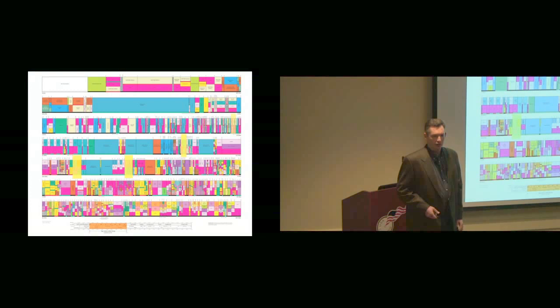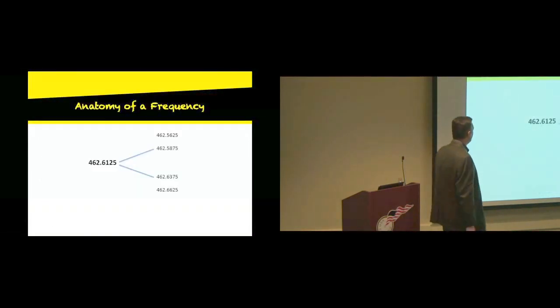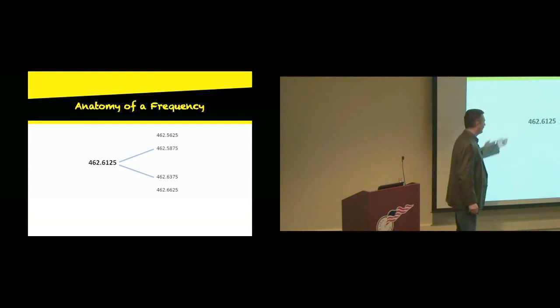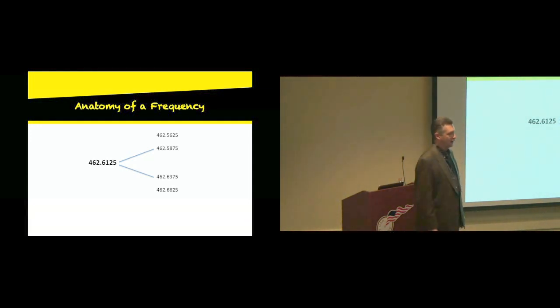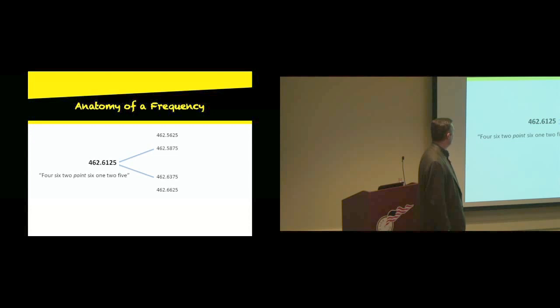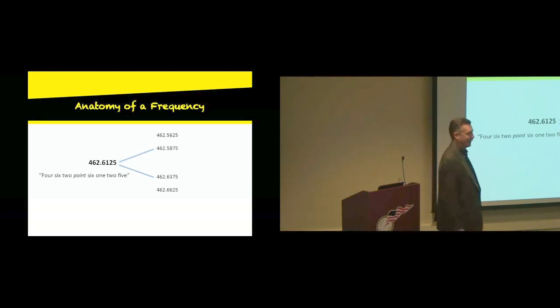We have these little slices right in here we're dealing with. What I want to talk to you guys today about is why you want to end up in these two places when you're dealing with your local races and association stuff. A very common frequency we use at bike races is 462.6125 megahertz — I'll tell you what that means in English later. That's how we say it: 462.6125 megahertz.